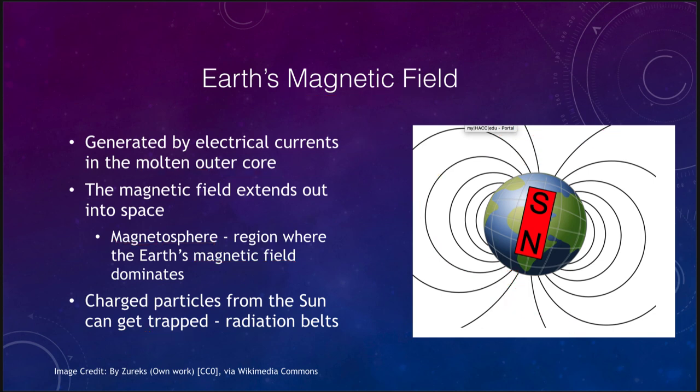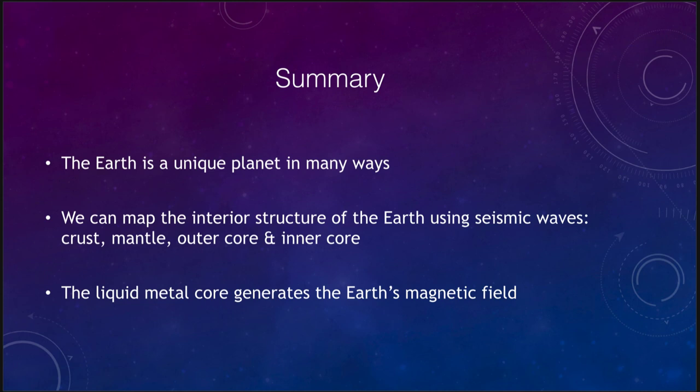So finishing up here with our summary, let's look at what we've gone over this time. And we did talk about how the Earth is a unique planet in many ways. We talked about water, only planet with liquid water on its surface. We talked about oxygen, and we talked about life as several things that are very unique to the Earth. We learned how we can map the interior structure of the Earth using seismic waves, and we divided the Earth into four parts: a crust, the part we live on and can explore, the mantle, the outer core, and the inner core. And we learned that the liquid metal core and currents in that are what generates the Earth's magnetic field and protects us from charged particles from the Sun.